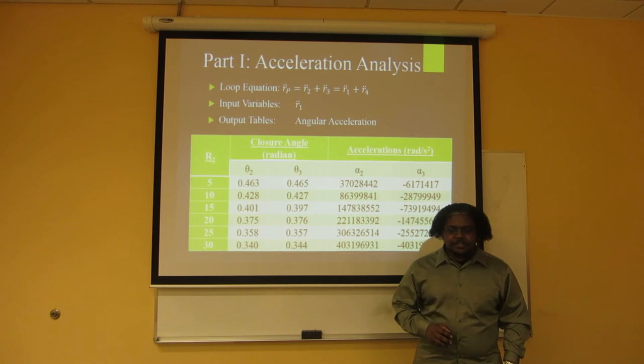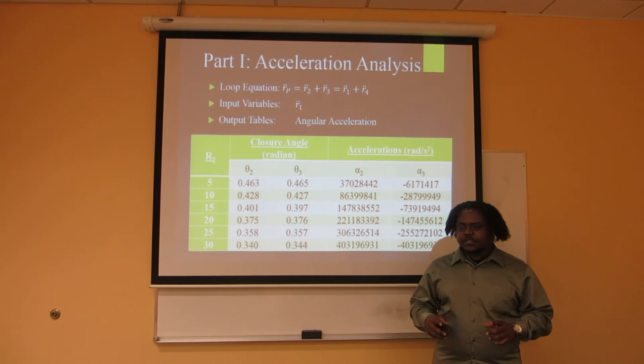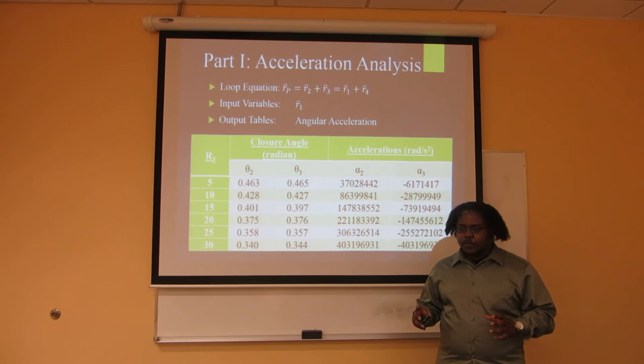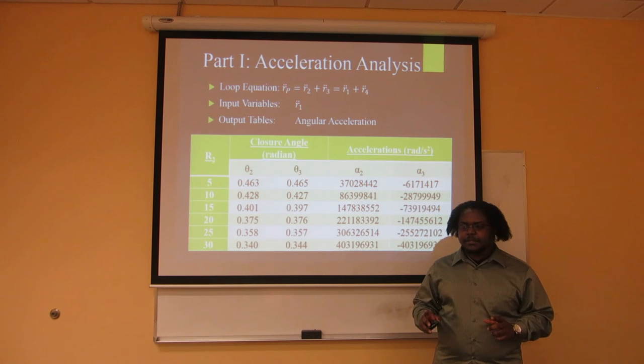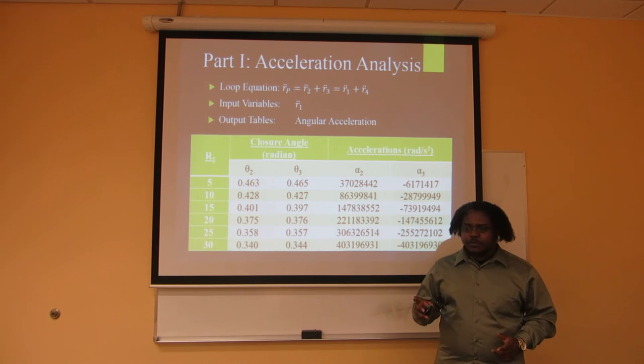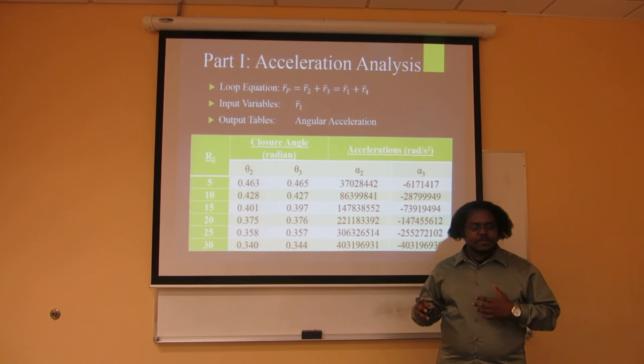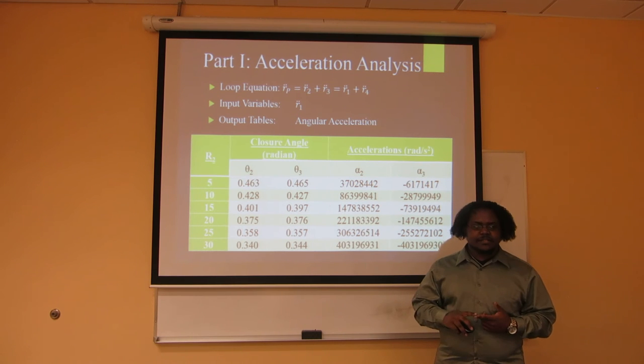For the acceleration analysis, the closure equation was further differentiated to give the acceleration components in the x and y. The input variable of R1 had a 0 acceleration, so it did not affect the equation at all. These closure angles are given for the original position analysis of R2 lengths. The accelerations are calculated based on those closure angles and the previously calculated velocity analysis values.